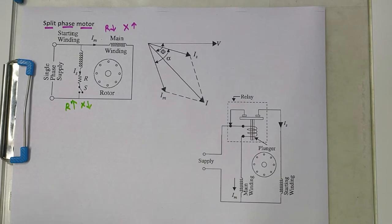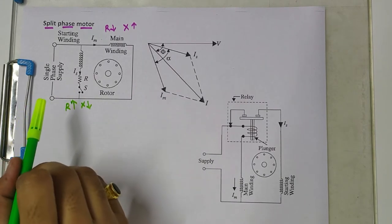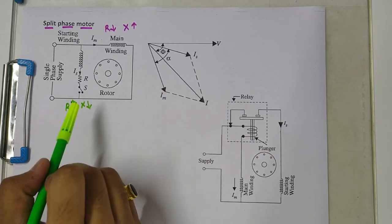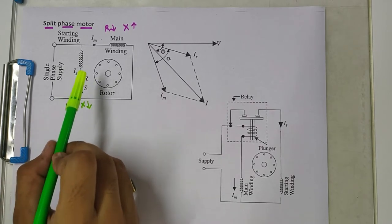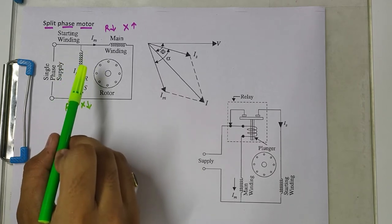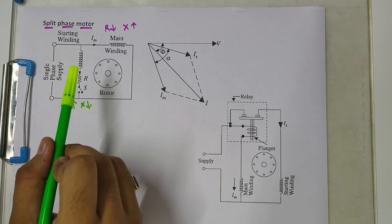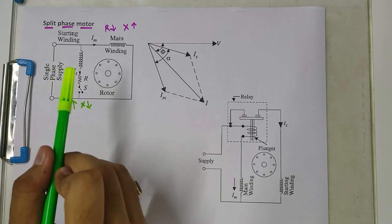The resistance of the starting winding can be increased by either connecting a high value resistance in series with it or by choosing a high resistance thin copper wire. Because as the cross section of the copper wire reduces, the resistance of the same will increase.